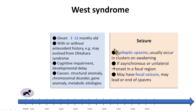The babies may have or may not have an antecedent history. In some cases, a baby with Ohtahara syndrome or other early-onset epilepsies may evolve to develop West syndrome. Global developmental impairment is typically seen at onset of epileptic spasms, although occasionally development may be normal and developmental trajectory continues as expected. The causes are heterogeneous, with structural anomaly being the most common. Epileptic spasms are the mandatory seizure type, usually occurring in clusters on awakening or before sleep. If the epileptic spasms are asynchronous or unilateral, we should consider onset in a focal region. There may be focal seizures that lead or end the spasms.